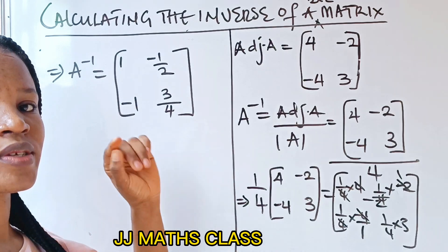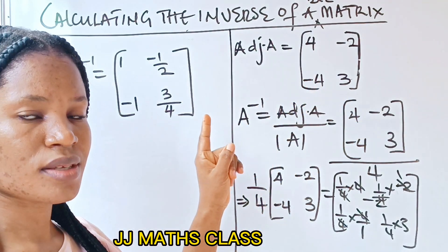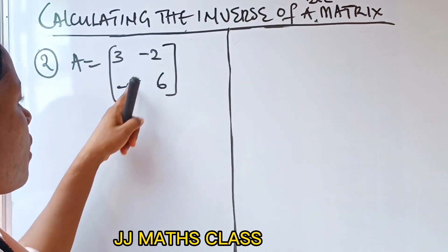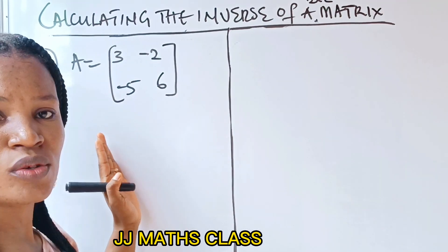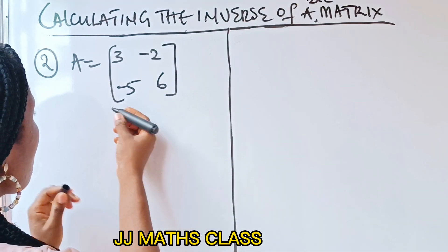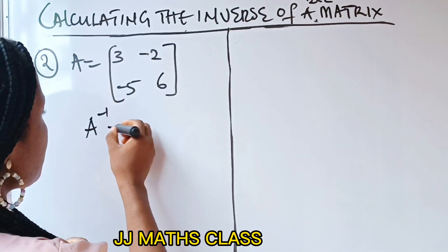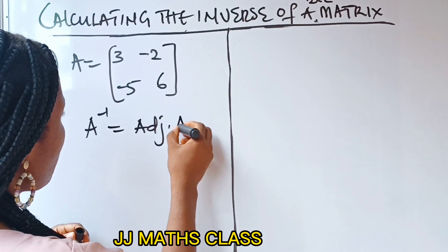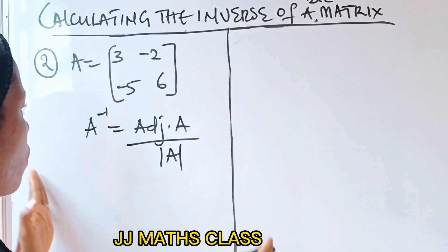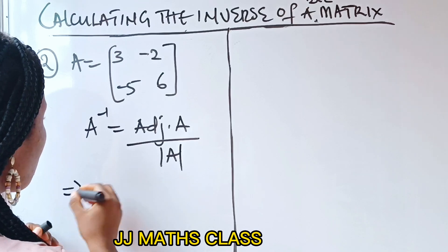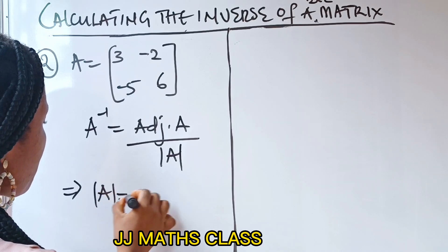I told you it's very easy. Now, what if we have negative signs in the matrix? What if there is a negative sign here and another negative sign here? It's still the same method. You know that A inverse is adjoint of A divided by the determinant of A. So first of all, let's find the determinant of A.